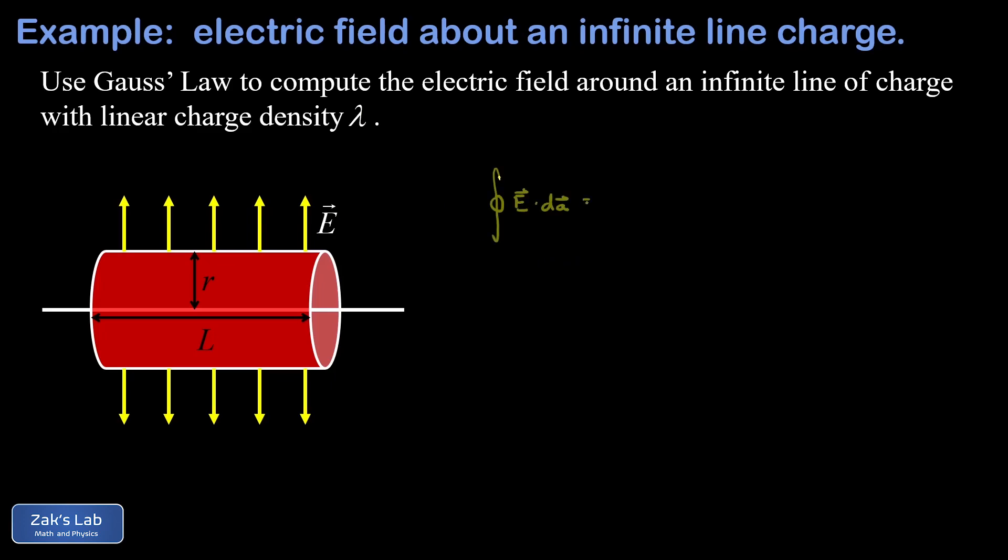So we start with Gauss's law and that says the integral of E·dA over the entire closed surface, in other words the electric flux through the entire closed surface, is equal to the enclosed charge over epsilon zero, the permittivity of free space.